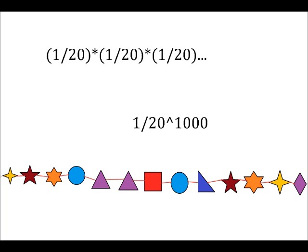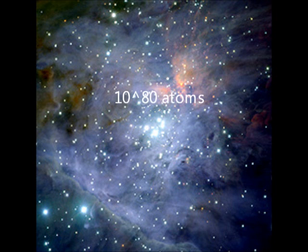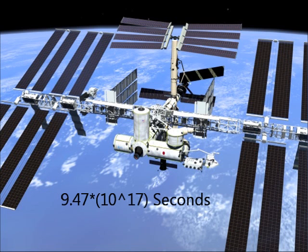Like I said in the video, there are 10 to the 80th atoms in the entire universe. There have also been 9.47 times 10 to the 17th seconds in the supposed 15 billion years since the Big Bang.